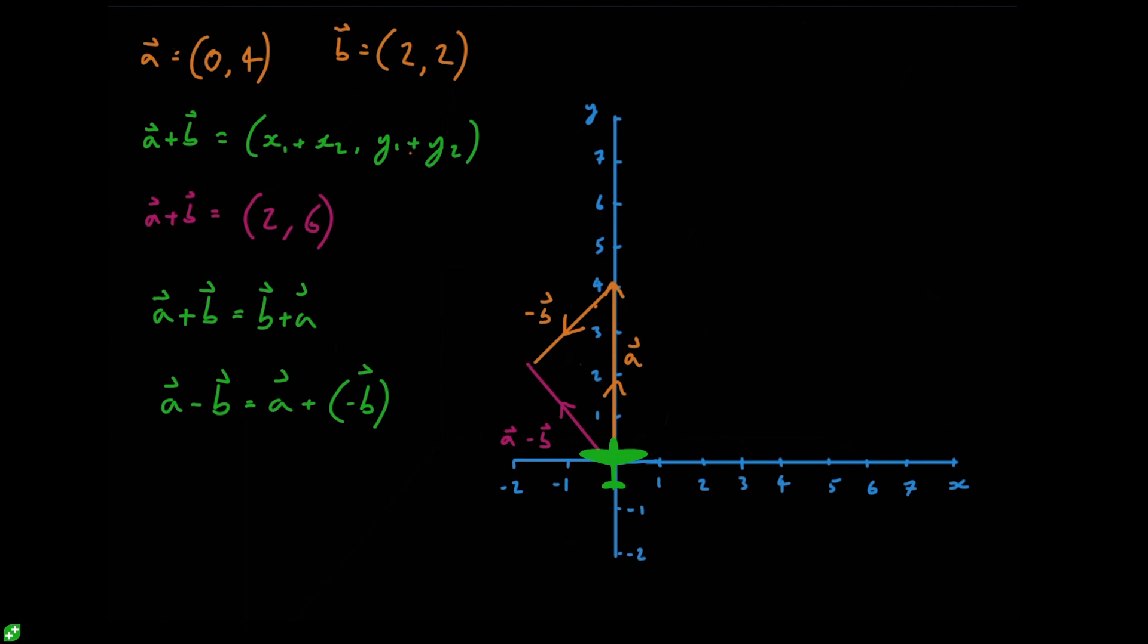And again if you think about this in real world terms it kind of makes sense. The wind is blowing off to the left so that's going to affect our movement to the left, and it's also blowing against us so that's going to slow us down and we're not going to travel quite as far. So we end up with the vector a minus the vector b.